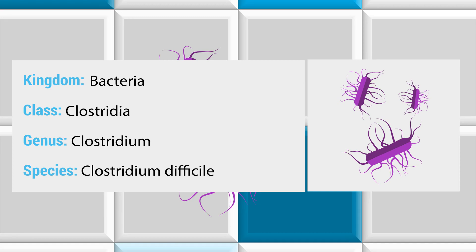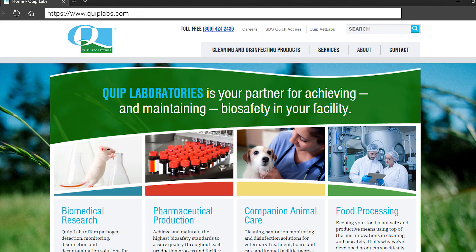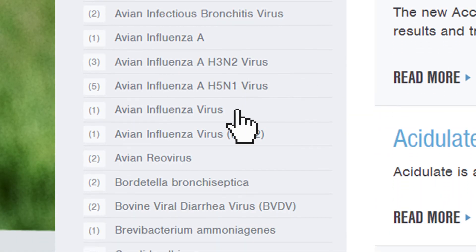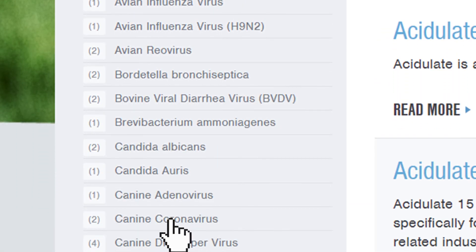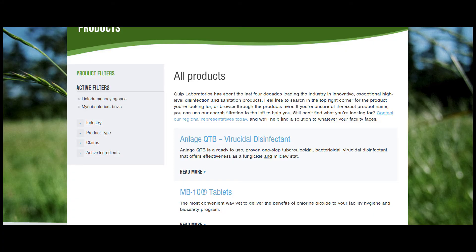Once you know which bacteria are setting up shop in your facility, you can head over to quiplabs.com and use our product filter to sort all products by efficacy claims. You can even add more than one bacteria to the list, and see only products that killed both of those species.